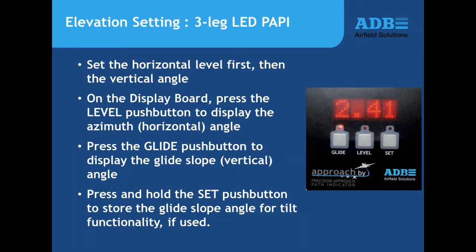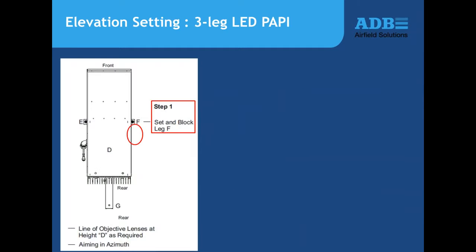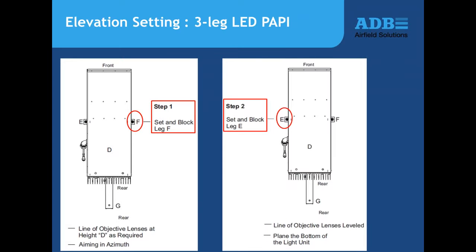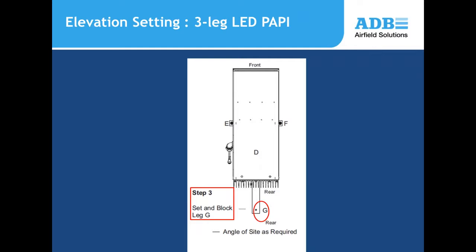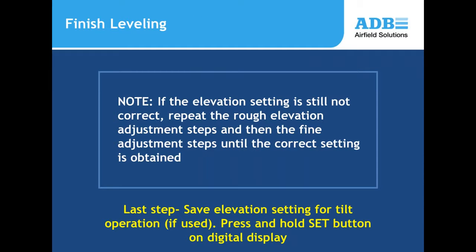For each unit, adjust the front two legs first to achieve horizontal level — reading zero degrees on the horizontal measurement. Then adjust the rear leg to achieve the correct vertical angle for that light unit. Once the measurements look correct, lock everything down. In the FAA market where tilt switch functionality is used, press and hold the set button to store those values in the control board so the system knows when the unit is out of alignment.